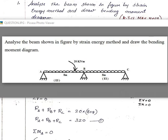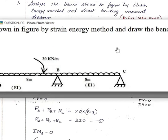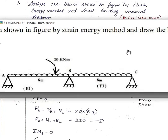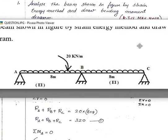In this lecture we have problems. The first question: analyze the beam shown in the figure by the strain energy method and draw the bending moment diagram. The type of beam is a continuous beam.